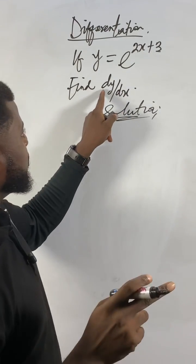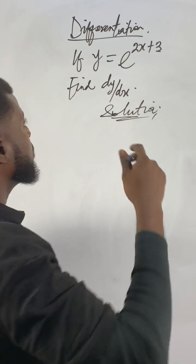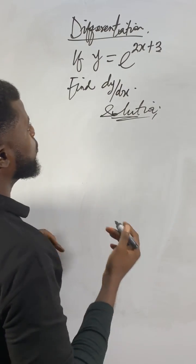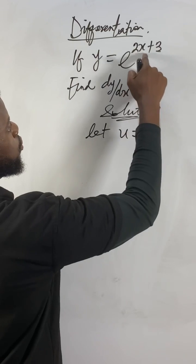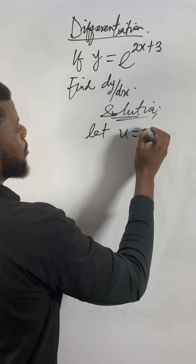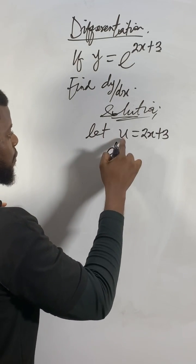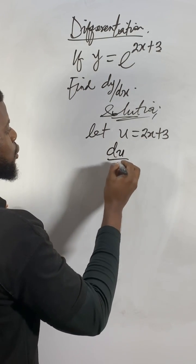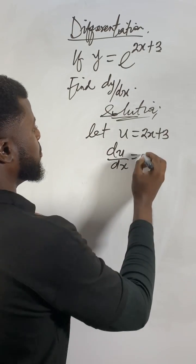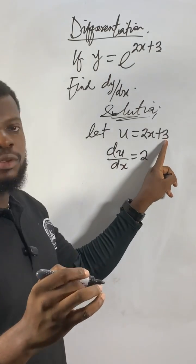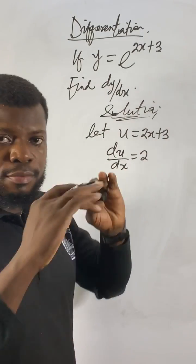What I will do first: the same thing — I take the derivative of y with respect to x. We have e to the exponent of 2x plus 3. The first thing that comes to mind is: let u be equal to 2x plus 3. So I will take the derivative of u with respect to x — du over dx. The derivative of 2x gives me 2, and the derivative of 3 is 0. So du/dx equals 2.